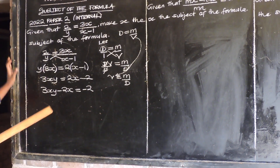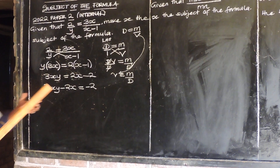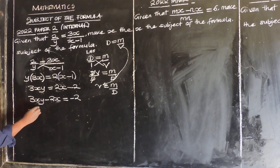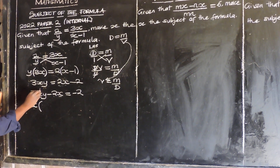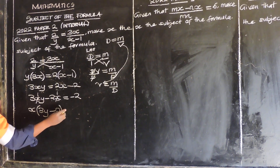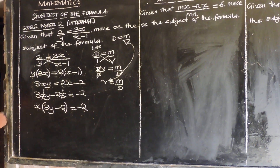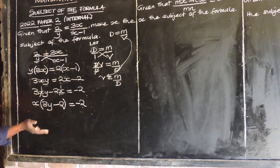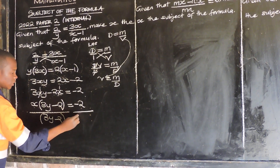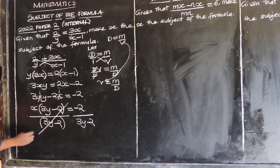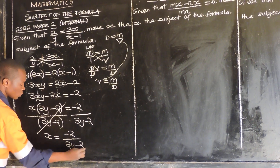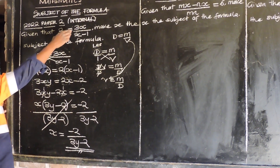Now we factorize. The common factor is x. So we say x open brackets: x into x is 1, 1 times 3y gives 3y, minus 1 times 2 gives 2, close brackets, is equal to negative 2. To isolate x, divide both sides by 3y minus 2. So x is equal to negative 2 over 3y minus 2. That is our answer. We've subjected the expression to x.